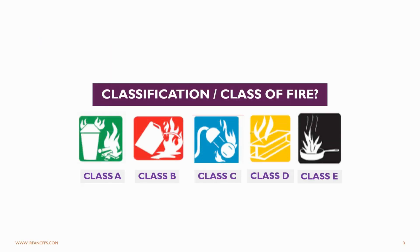As you can see on your screen, there are various classes of fire: Class A type, Class B type, Class C type, Class D type, and Class E type. These fire classifications are in accordance with the guidelines mentioned in NFPA 10. I will explain all these classes in the following slides.